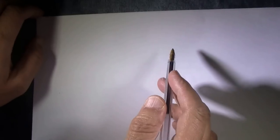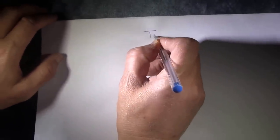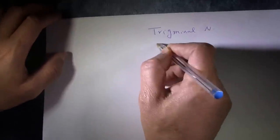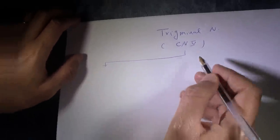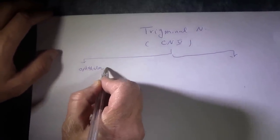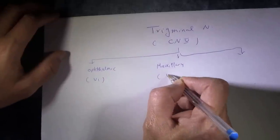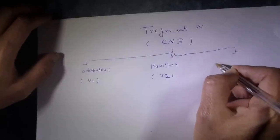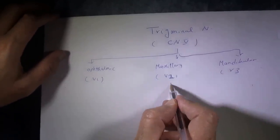I'm going to discuss the course and branches of the mandibular division of the trigeminal nerve. First, let me refresh your memory: the trigeminal nerve, cranial nerve number five, has three divisions. The first is ophthalmic (V1), the second is maxillary (V2), and the third is mandibular division (V3).